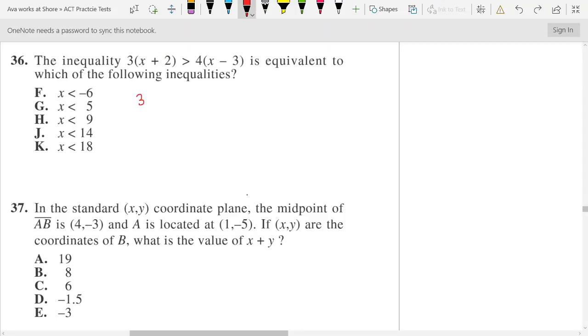and that gives me 3x plus 6 is greater than 4x minus 12. I'm just going to simplify from there. I'm going to subtract 3x from both sides. That's going to give me 6 is greater than x minus 12, and I'm going to add 12 to both sides. And that's going to give me 18 is greater than x, or I'm just going to flip it around to x is less than 18.